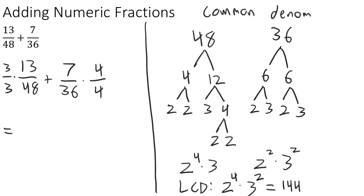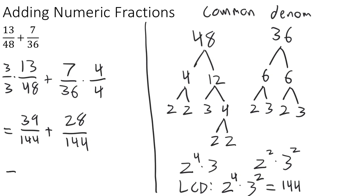Multiplying straight across in each case: 3 times 13 is 39 on top and 144 on the bottom. For the second fraction, 7 times 4 is 28 on top and 144 on the bottom. Now that we have a common denominator of 144 on both fractions, we add the numerators together. 39 plus 28 is 67, and the denominator stays 144.